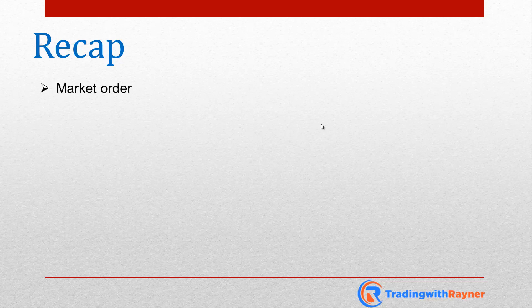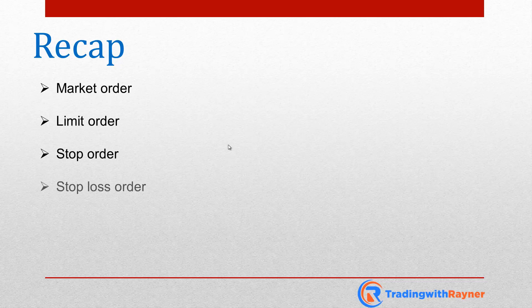Quick recap: Number one, a market order is where you want to enter the trade right now, at this very moment — maybe the market is moving without you. Number two, a limit order is when you want to enter at a cheaper price, you don't want to pay premium, you use a limit order — good risk-to-reward, but you might miss the move and you're usually entering against the current momentum. Number three, a stop order is usually for breakout trading — you're entering with momentum, but the downside is it could be a false breakout. Number four, a stop loss order is used to get you out of a losing trade — it protects your capital, but the downside is the market could reverse back in your direction after hitting your stop, which is simply the cost of doing business.